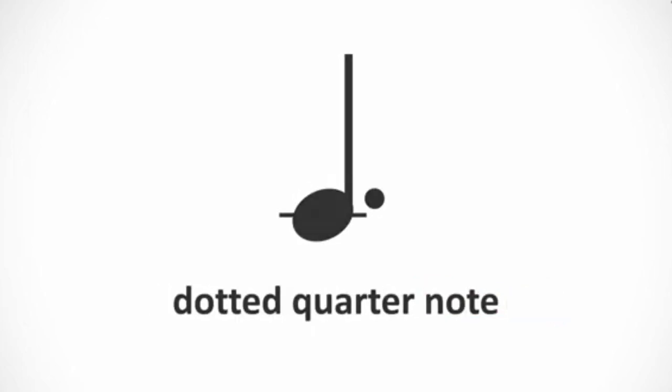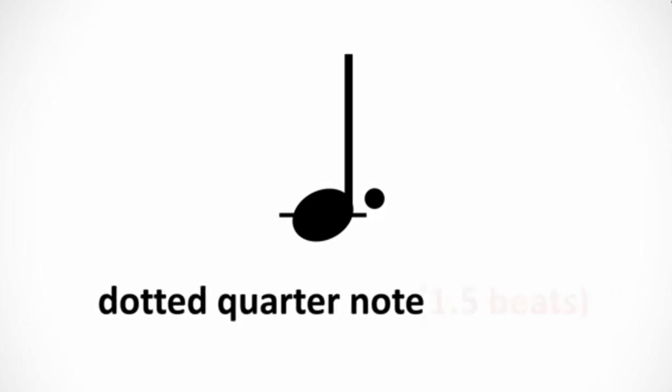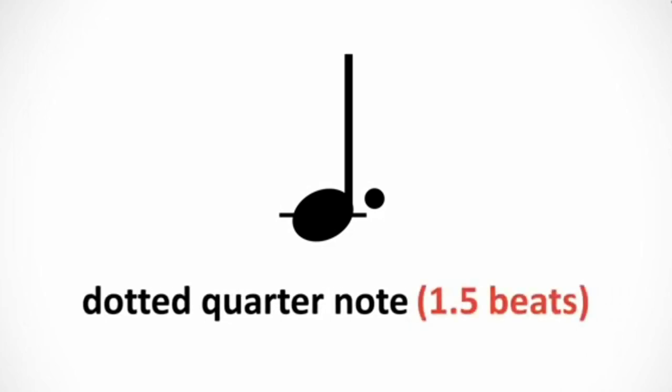Here's a dotted quarter note. The quarter note gets one beat most of the time, so the dotted quarter will get one plus one half. That's one and a half beats, or you can think of it as three eighth notes.